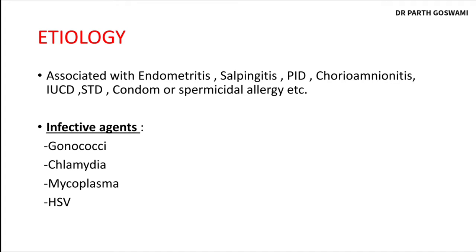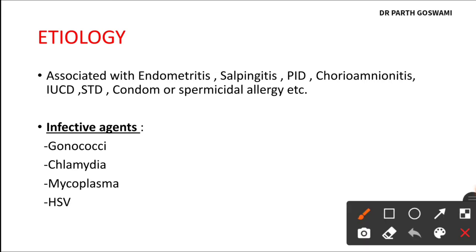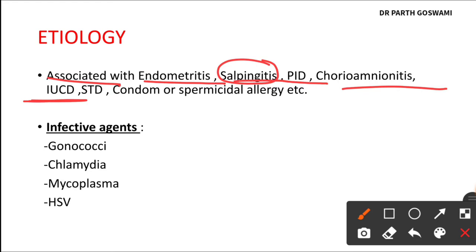Regarding etiology, papillary endocervicitis can be associated with endometrial inflammation, fallopian tube inflammation (salpingitis), pelvic inflammatory disease, and chorioamnionitis. It could also be associated with inflammation of other female genital organs. If a woman has an intrauterine copper device (IUCD) inserted as a contraceptive, this can be associated with development of endocervicitis. It could also be a part of sexually transmitted disease.